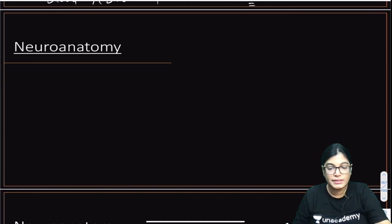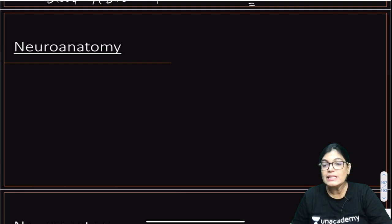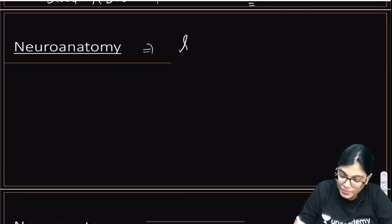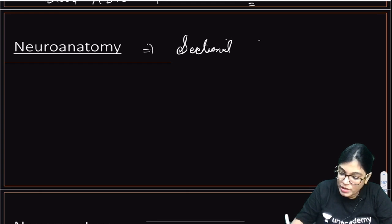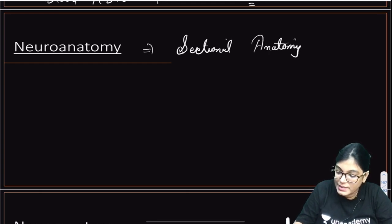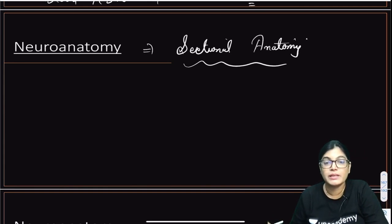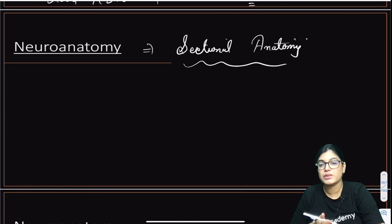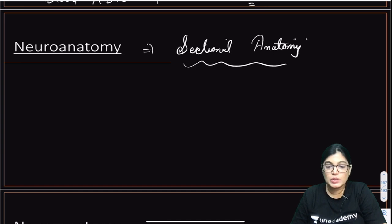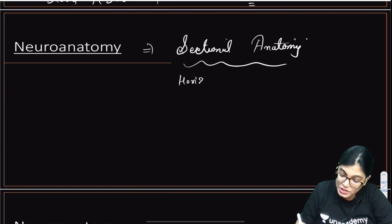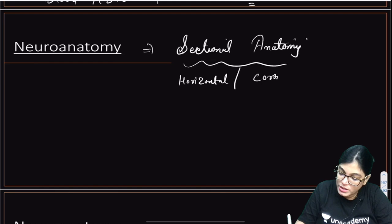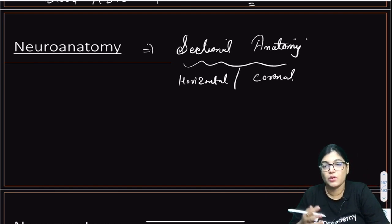Now moving to neuroanatomy topics — very important ones you cannot leave. Most important is sectional anatomy of the brain. Sectional anatomy is important not only for identification of structures but because clinical MCQs are framed from this topic — they ask about features seen in a patient with a lesion in a given structure. You must revise horizontal sections, coronal sections (four levels are particularly important), and the structures visualized there.